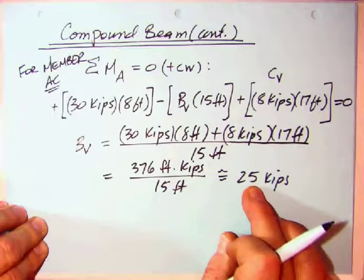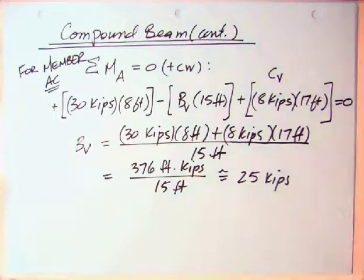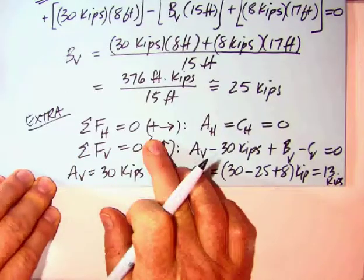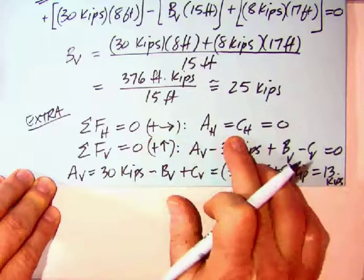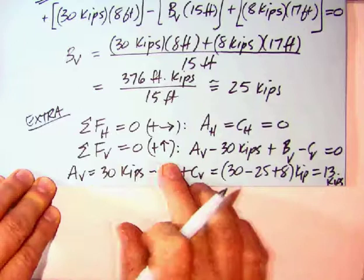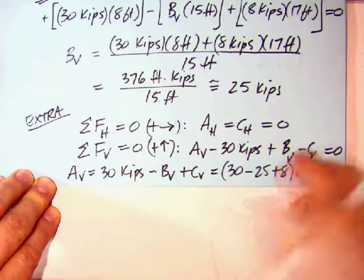So we really needed to do, we did need to separate. We did need to find CV, but then we find BV. Now, of course, if we wanted to, we could complete the things to find the rest, AH and AV. So let's do that as an extra. Okay, the extra is sum forces horizontally, and no surprise that we get AH equals CH equals zero, but then sum forces vertically, making positive up. We get AV is up, 30 is down,